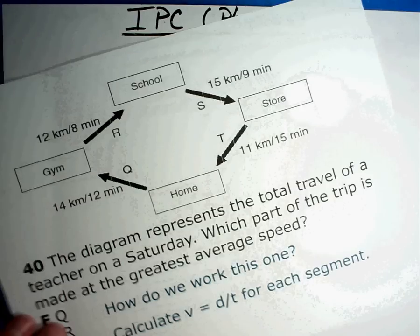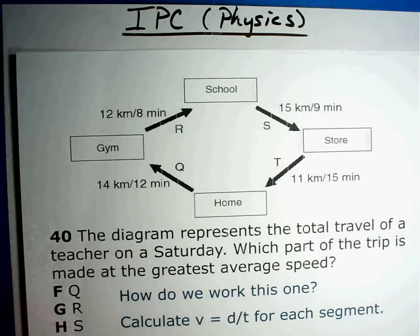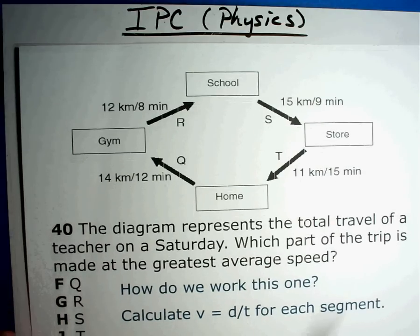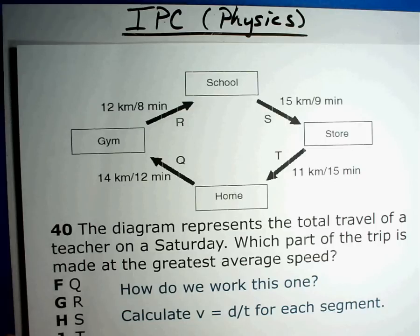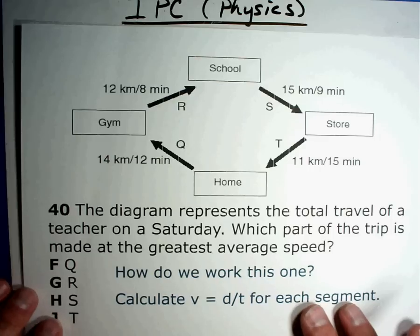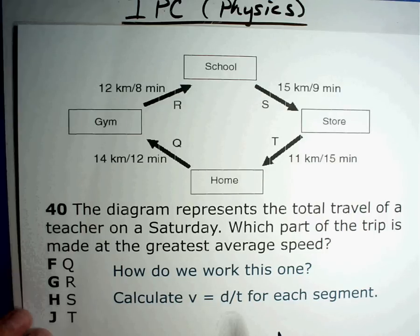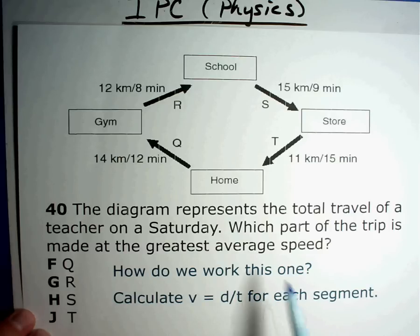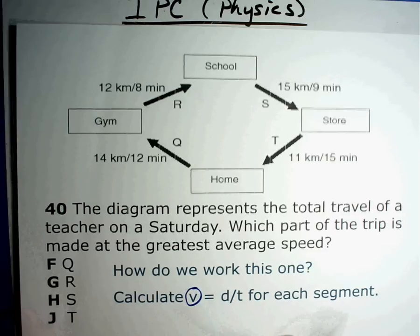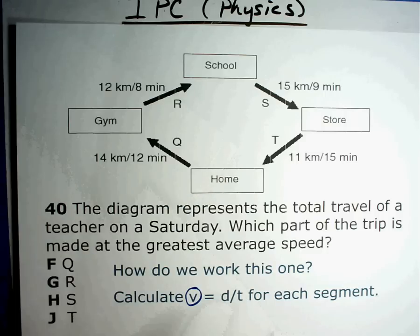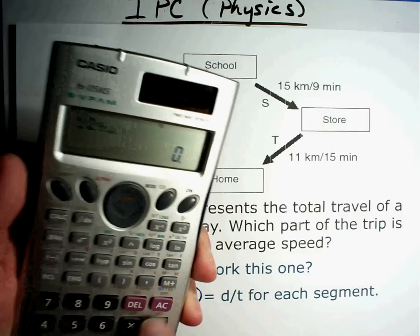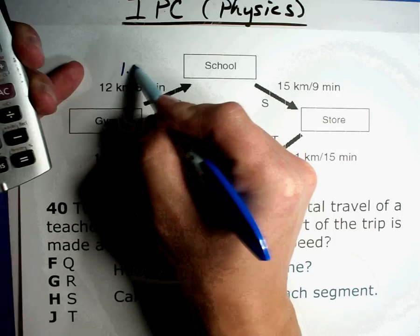Here's a really good example of dealing with velocities. I'm going to give you a second to look at it and see if you can come up with the answer — pause the video, see if you can get the answer — and then we'll come back in a minute and solve it. The question says: the diagram represents total travel of a teacher on a Saturday. Which part of the trip is made at the greatest average speed or the greatest velocity?